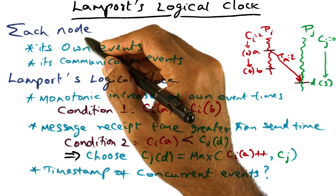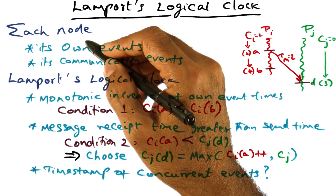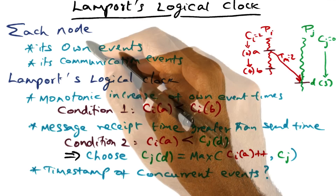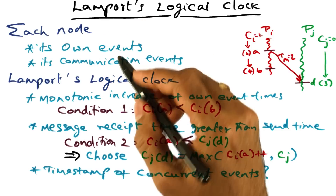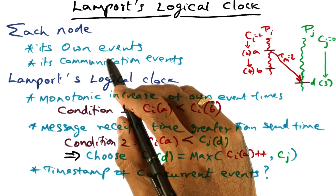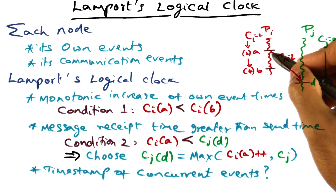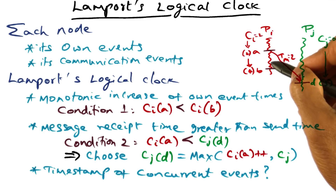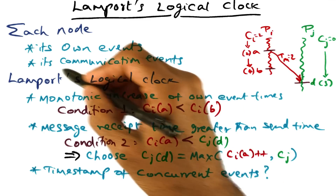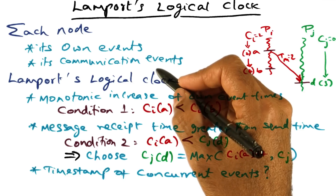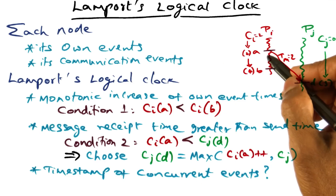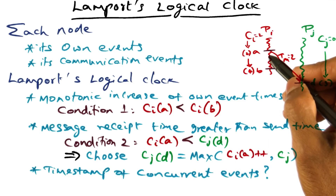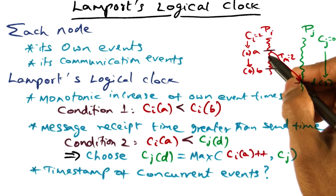What does each node in the distributed system know? Every node knows its own events — the computational events that are happening in its own execution. It also knows about its communication events with the rest of the nodes in the distributed system.